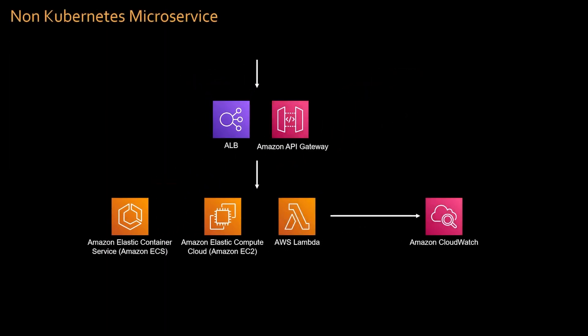So what does a non-Kubernetes microservice look like? You can use an Application Load Balancer or Amazon API Gateway, and your containers — remember, still containers — can run on Amazon ECS, Amazon EC2, or AWS Lambda. All these services integrate out of the box with CloudWatch, so monitoring, alerting, logging, and cost optimization using CloudWatch Container Insights are available immediately. You write your code, deploy it, and it starts running. I don't want this video to be overly negative on Kubernetes — I love Kubernetes and work with it all the time — but it has its time and place.